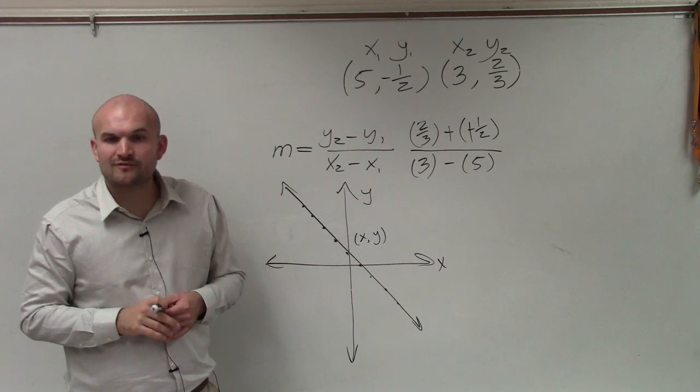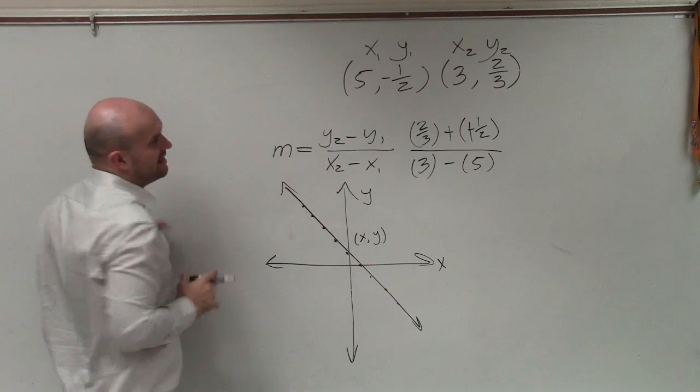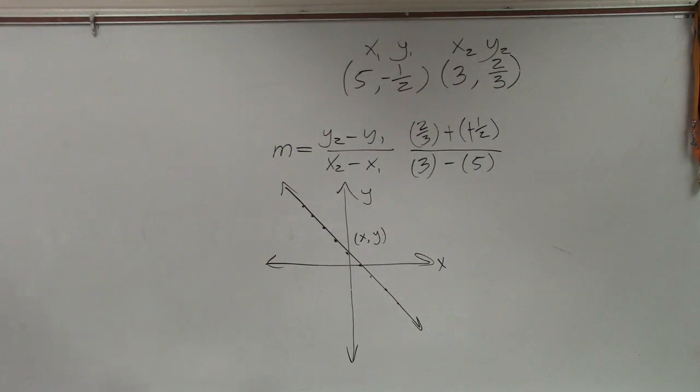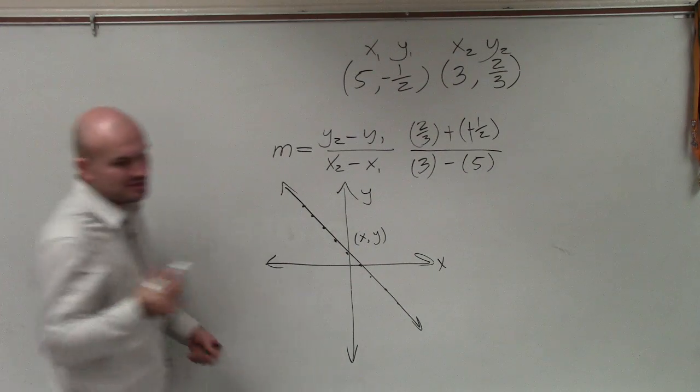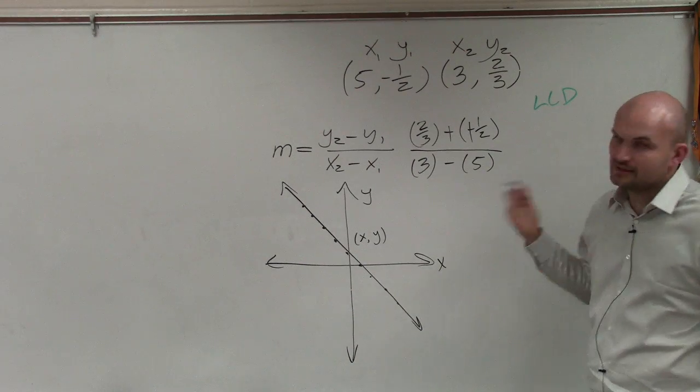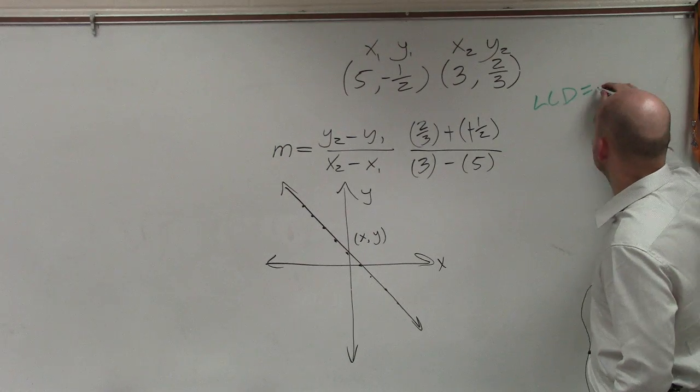Now, I did want to include one with the fractions because I did want to remind you guys how to add fractions. So for this case, remember when we're adding fractions, we cannot add them if they do not have common denominators. So the first thing I need to do is determine the LCD between 2 and 3, which is going to be the least common denominator or the least common multiple of 2 and 3, which is 6.